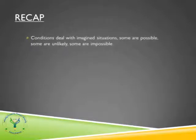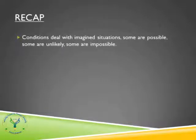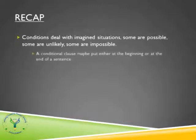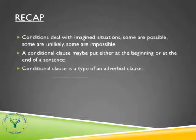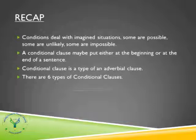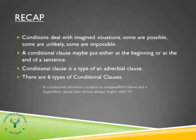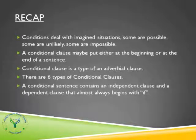Now to quickly recap the lesson: conditionals deal with imagined situations — some are possible, some are unlikely, and some are impossible. The conditional clause may be placed either at the beginning or at the end of a sentence. A conditional clause is a type of adverbial clause and there are six types. A conditional sentence contains an independent clause and a dependent clause that almost always begins with 'if'.